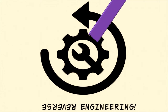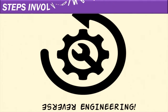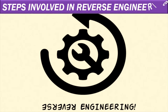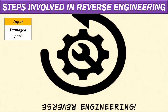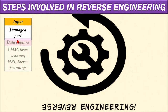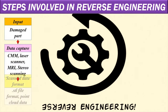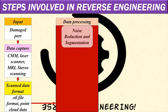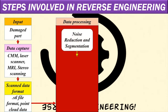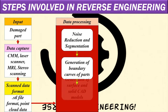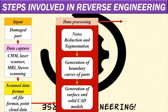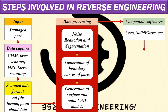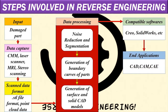Let's talk about the steps involved in reverse engineering. First is the input — the input is the damaged part or existing part. The damaged or existing part needs to be redesigned. First, from the damaged part, the data is captured. The data is captured by CMM or laser scanning. This device captures the data.